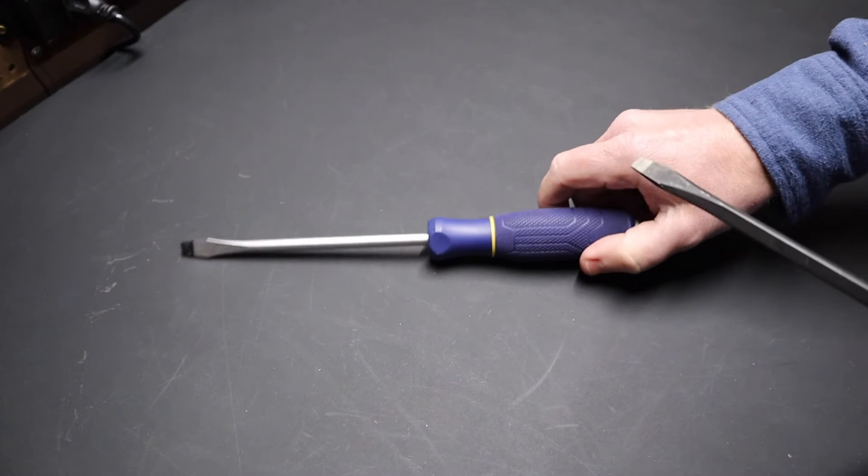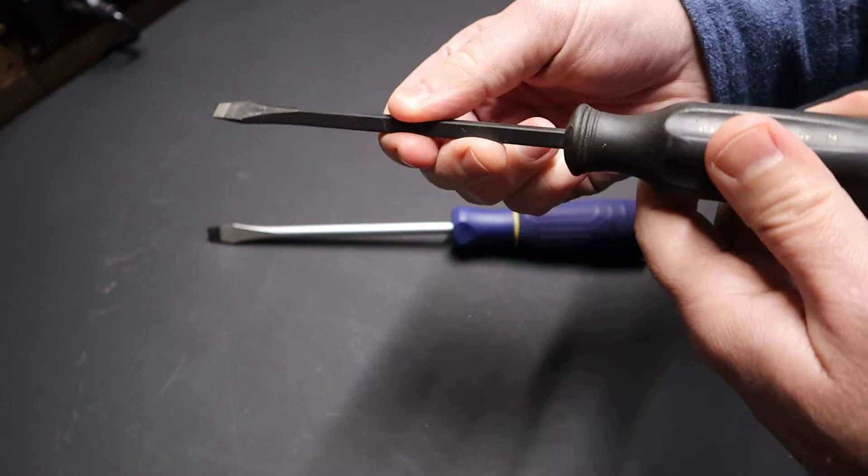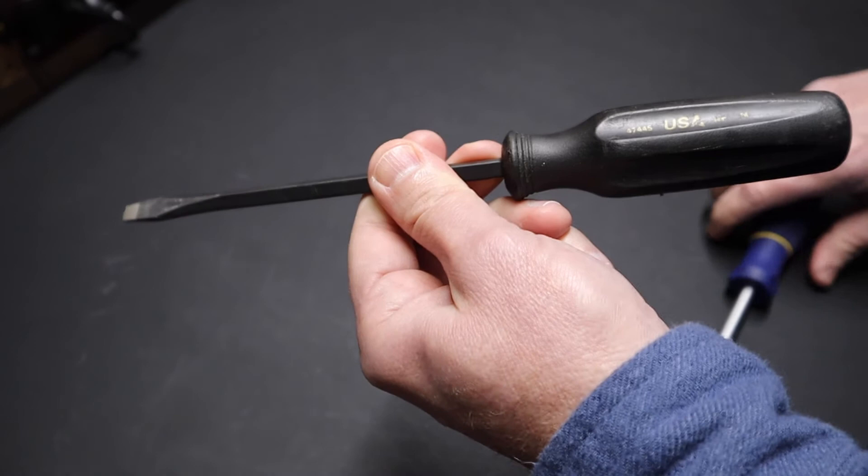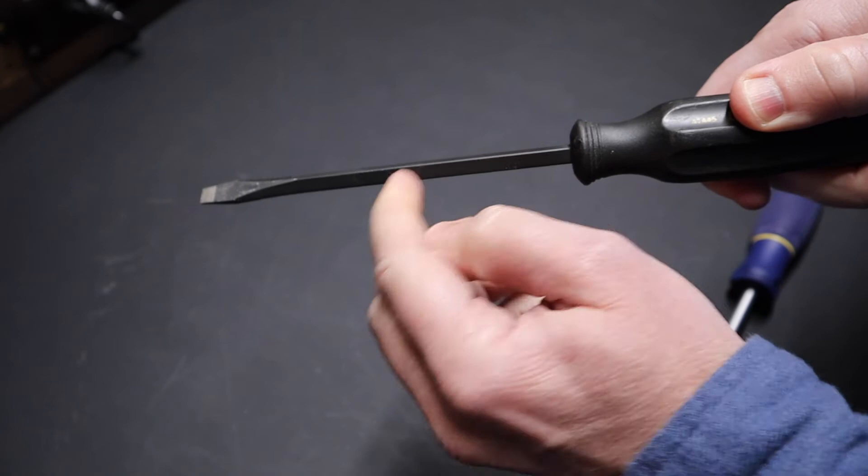You can look at this example and see it lines right up with the business end of the screwdriver. You have this flat edge and then you have a sharp corner right here on these hex screwdrivers. That results in, if you're working on something and prying, you're shoving this corner right into whatever you're working on.